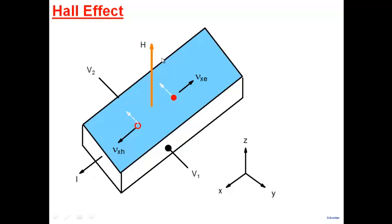The way the Hall effect works: you have a sample, let's say a silicon sample, and you pass current through it. Current flows from one end and exits the other — current is flowing in the x-direction. If you have a p-type semiconductor with holes, the holes would be drifting in the direction of the current, in the direction of drift velocity.